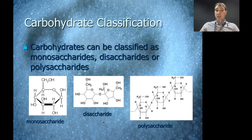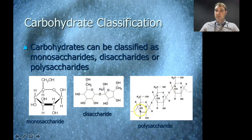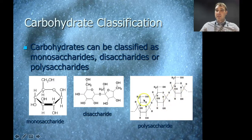Carbohydrates can be classified as mono-, di-, or polysaccharides. A monosaccharide has one ring of sugar, a disaccharide has two rings of sugar, and polysaccharides have more than two rings of sugar. Examples include glucose as a monosaccharide, sucrose as a disaccharide, and polysaccharides such as starch, glycogen, or cellulose — all of which are lots of glucose units joined together, differing in where those glucose units connect to each other.